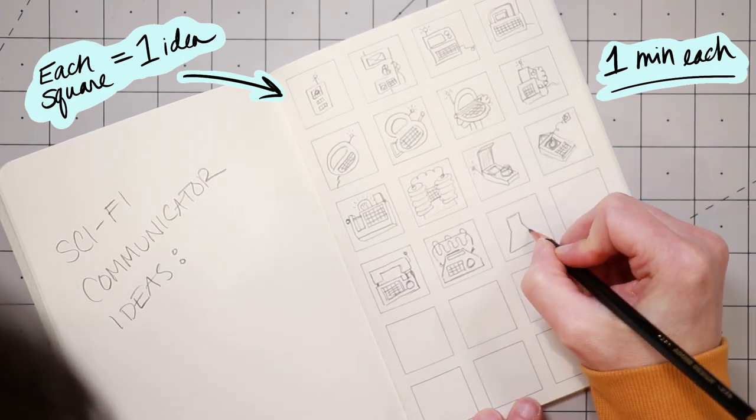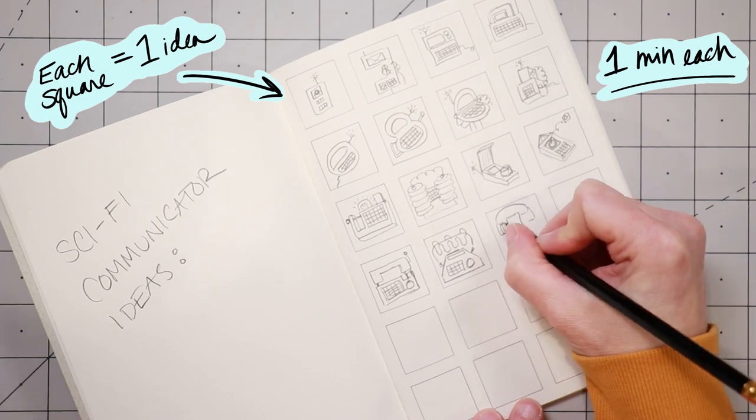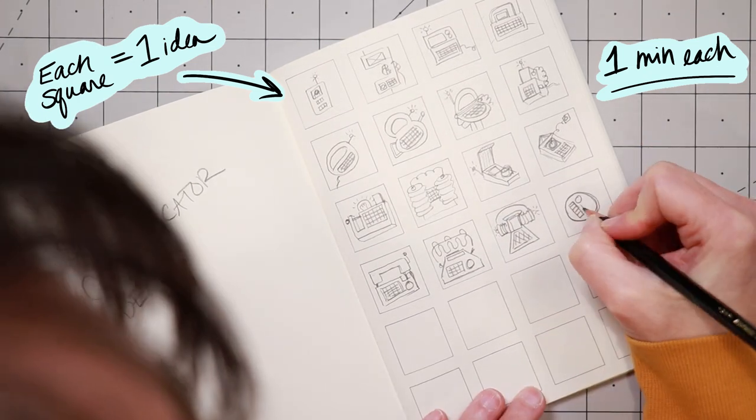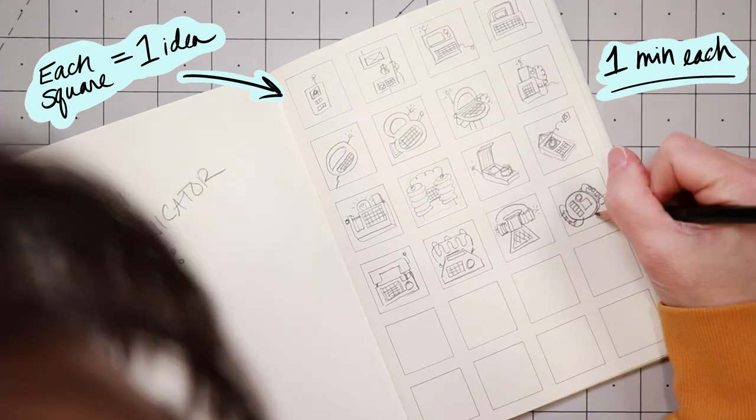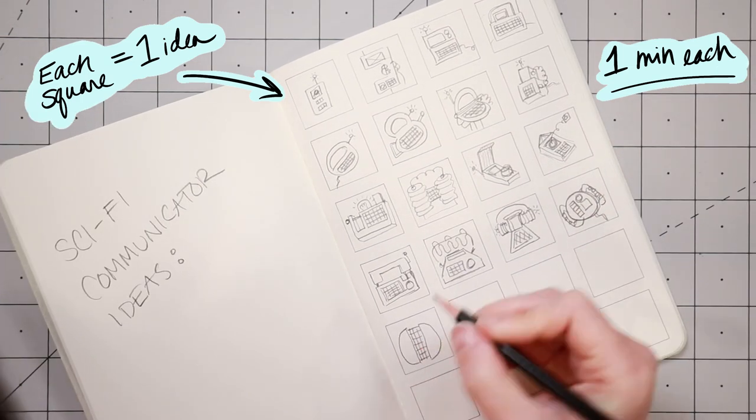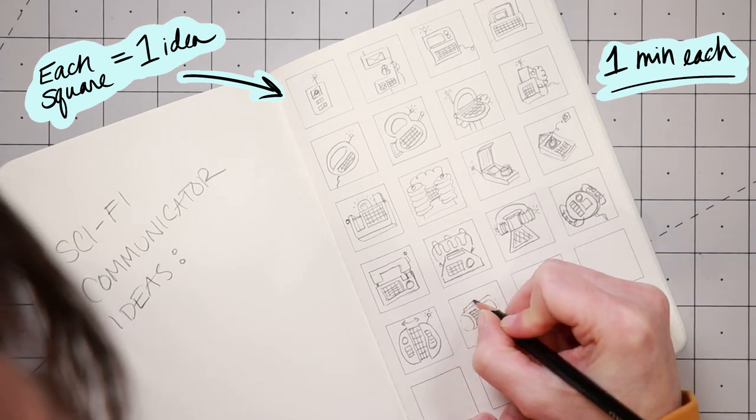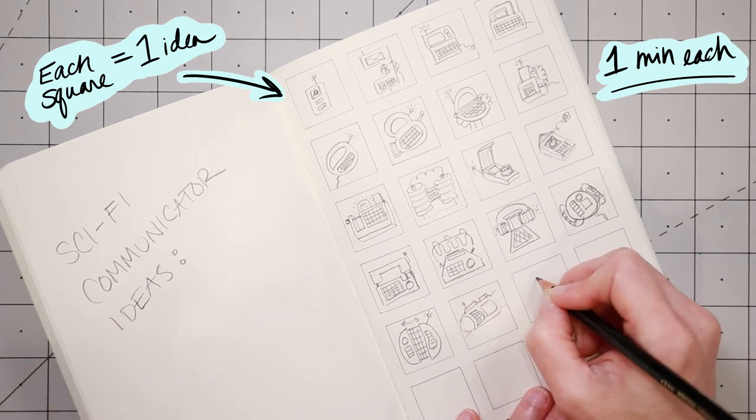And when you've filled up the page, you can look back and evaluate your ideas. If after 20 or 30 thumbnail sketches, your first idea is still the best one, then hey, you've proved it. And if it isn't, then you've found something better, or maybe several better ideas.